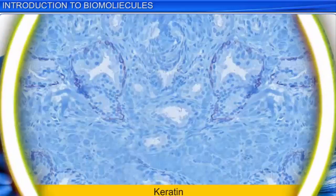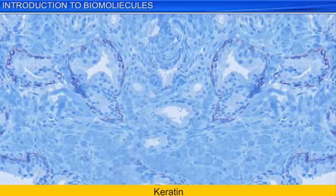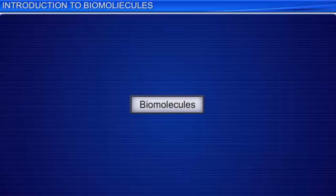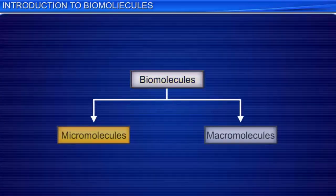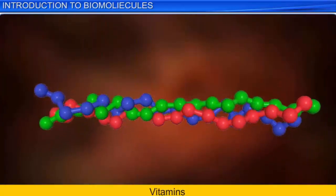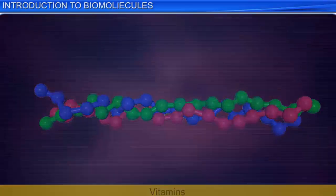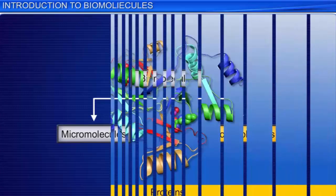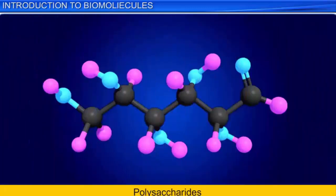For example, carotene. The main component of hair is an agglomeration of proteins. Based on molecular mass, biomolecules can be classified into micromolecules and macromolecules. Micromolecules are biomolecules whose molecular weight is less than 1000 and include sugars, lipids, vitamins and so on. Macromolecules are biomolecules whose molecular mass is greater than 1000, which includes proteins, polysaccharides and nucleic acids.